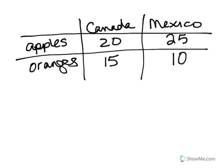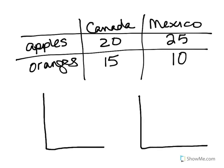From this data, we can construct each country's production possibility curve. Your production possibility curve is going to look something like this. So we can draw a production possibility curve for both Canada and Mexico — this one is for Canada and this one is for Mexico.